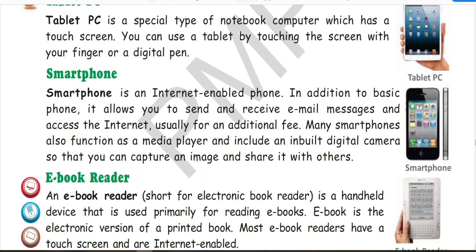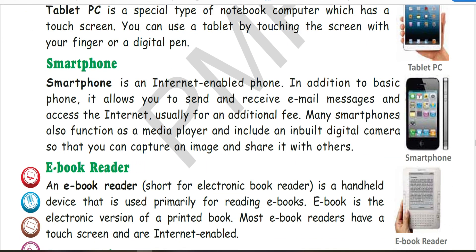Now let's talk about smartphone. Smartphone is available everywhere. You can enable internet on a smart phone. You can receive and send messages and emails. Internet usually has additional charges. Smart phones also function as media players and have an inbuilt digital camera, which you use for photography and sharing photos.